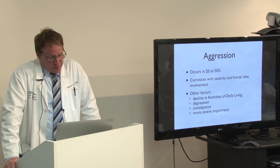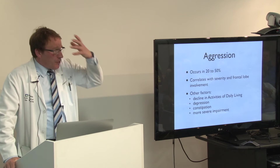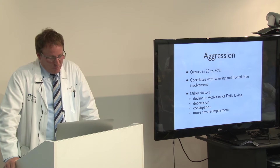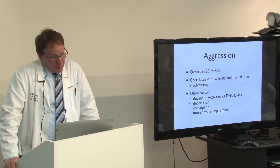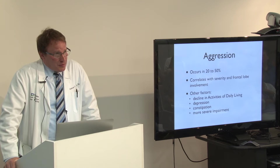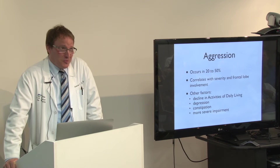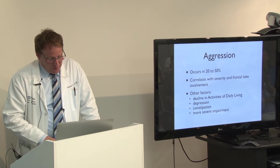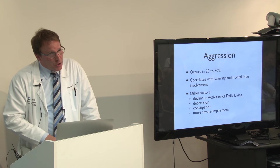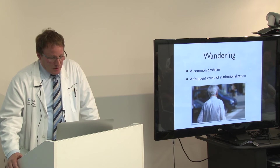Aggressive behavior can occur in 20 to 50% of patients. It's generally correlated with severity but also with involvement of the frontal lobes. There are a number of other factors that affect aggression, including when you're unable to complete activities of daily living. If somebody needs to intervene to help you, you can become more aggressive. If you're depressed, you can become more aggressive. If you're constipated, you can become more aggressive — it's often something we overlook and something that can be a trigger for many of the behaviors that we see.